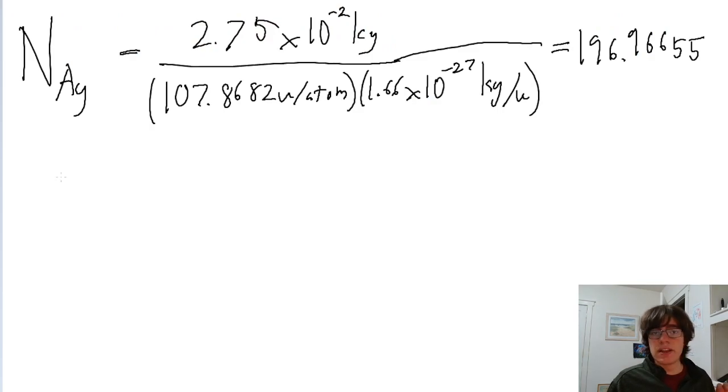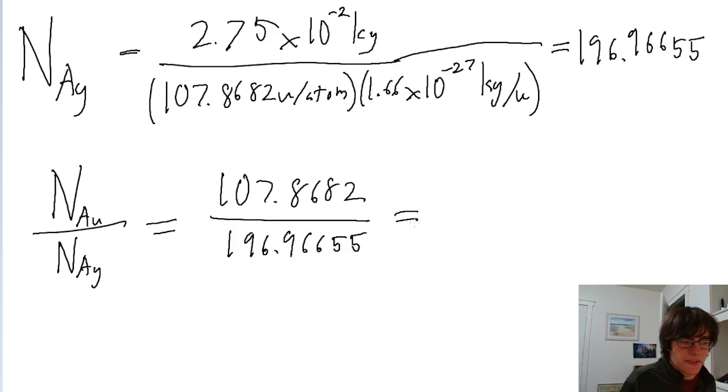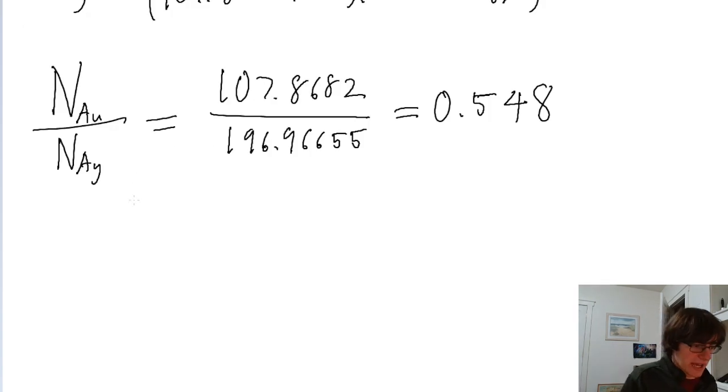Now we know the number of atoms in each. The problem is asking how do they compare. So let's take a fraction. Let's take the number of gold atoms and divide it by the number of silver atoms. That's 107.8682 divided by 196.96655. Put this into a calculator, and this is a fraction of 0.548.